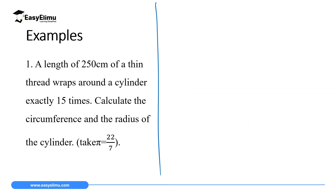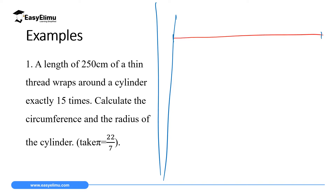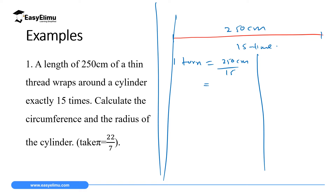Example: a length of 250 centimeters of thin thread wraps a cylinder 15 times. Calculate the circumference, diameter, and radius. The thread is 250 cm and goes around the cylinder 15 times. To find the length for one turn: 250 cm ÷ 15 = 16.67 centimeters. This is the length for one wrap around the cylinder.